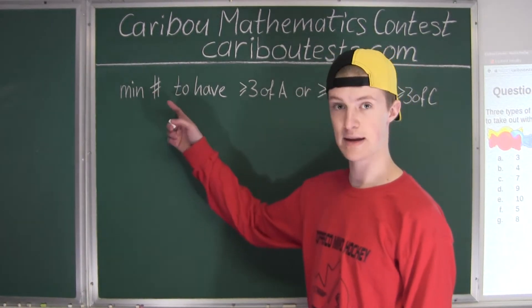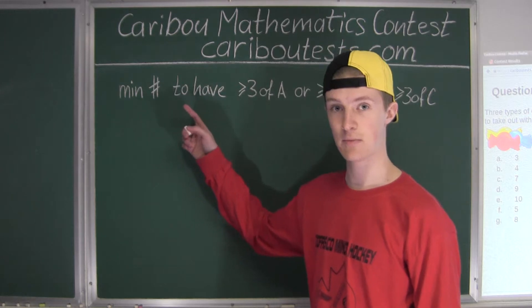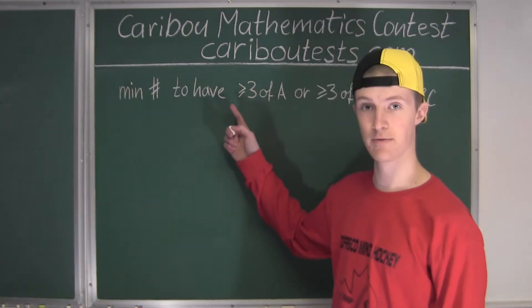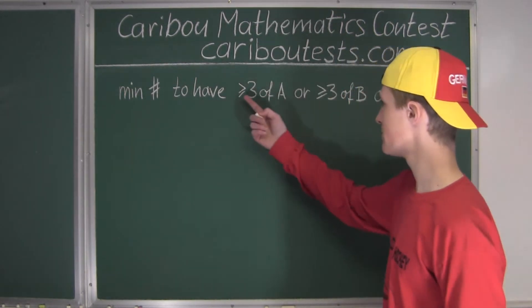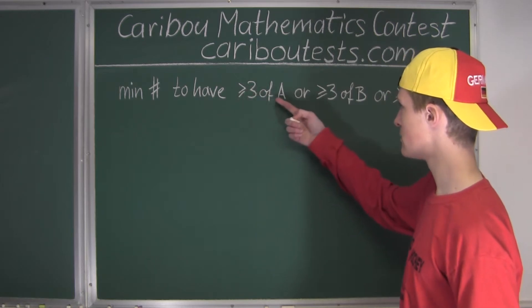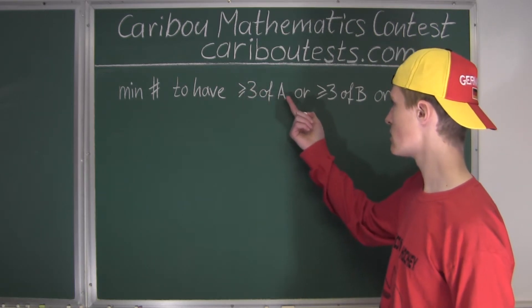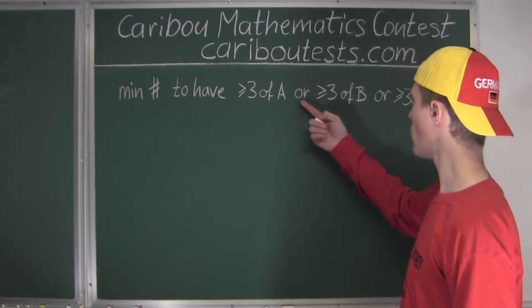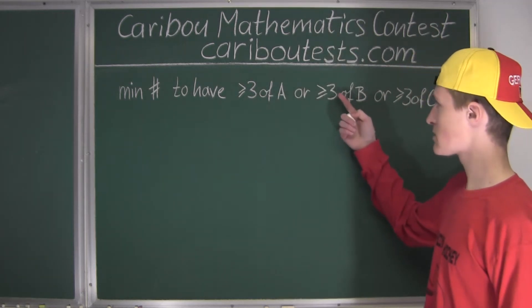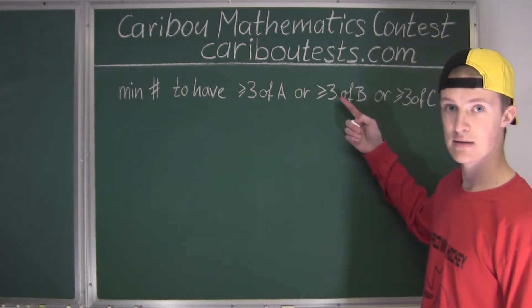All right, so the question asks us to find the minimum number of candies such that we have at least three of one type on the table. So at least three of type A—we will just call the first type candy A—or at least three candies of type B.